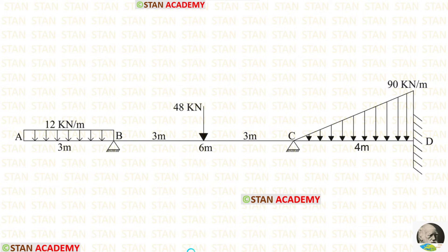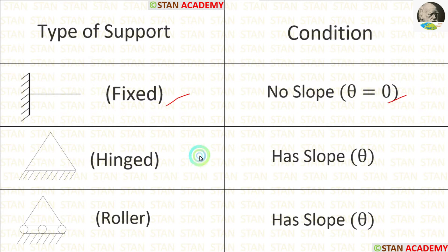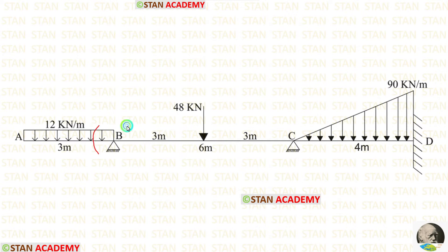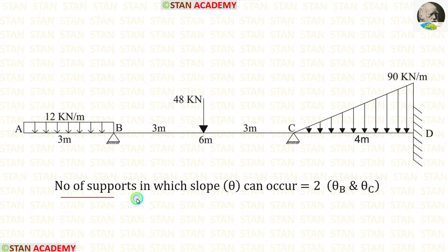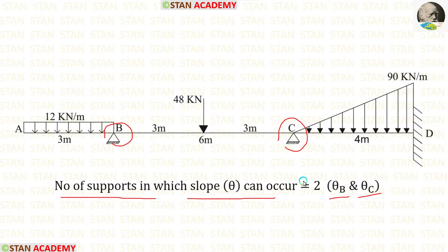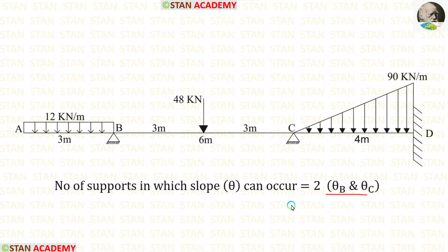In the slope deflection method, we have to check the number of supports in which slope can occur. In a fixed support there will be no slope. In a hinged support or roller support there will be slope. In this beam, at points B and C there are hinged supports, so the number of supports in which slope can occur is 2: theta B at point B and theta C at point C. So in this analysis there are two unknowns.